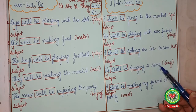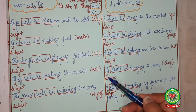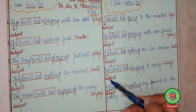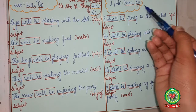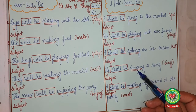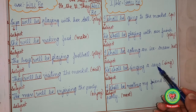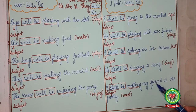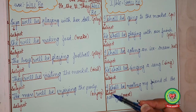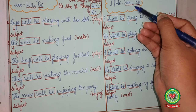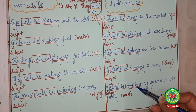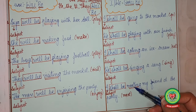We dash a song, and the verb is sing. Who? We — so subject. With we we will always use shall be. Sing will change to present form of verb plus ing, that is singing. So the answer is: we shall be singing a song. I dash my friend at the party, and the verb is meet. Who? I — so subject. With I we will always use shall be. Meet will change to meeting. So the answer is: I shall be meeting my friend at the party.